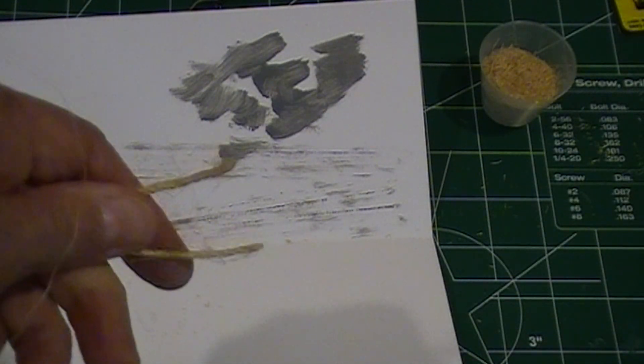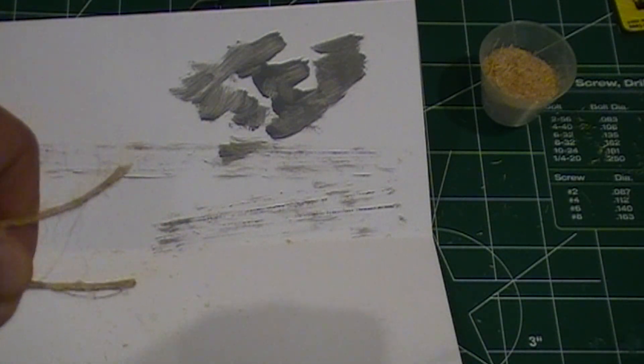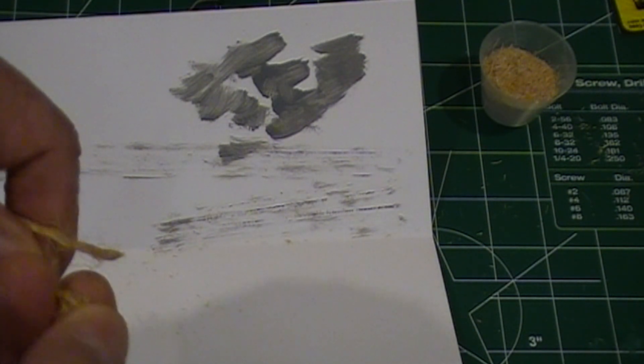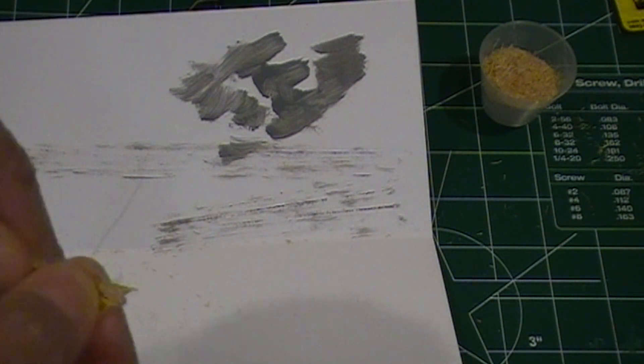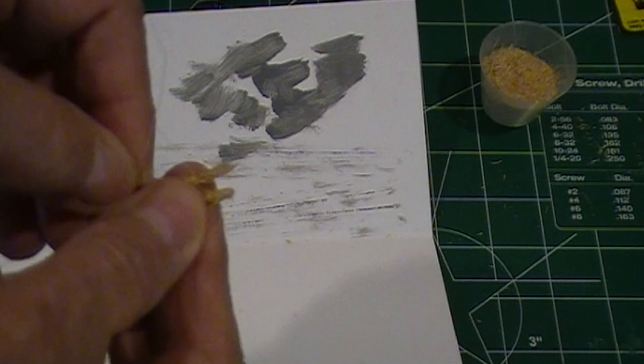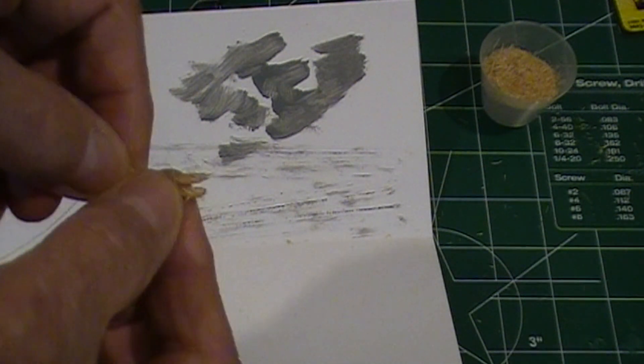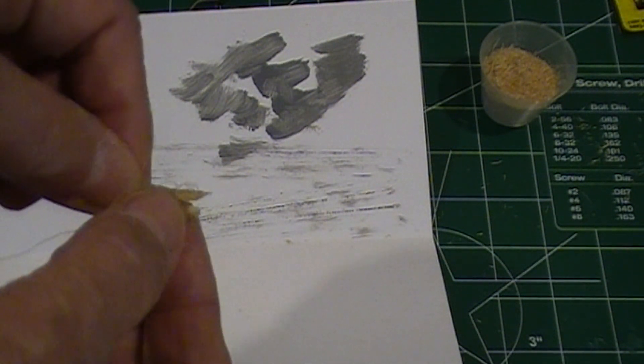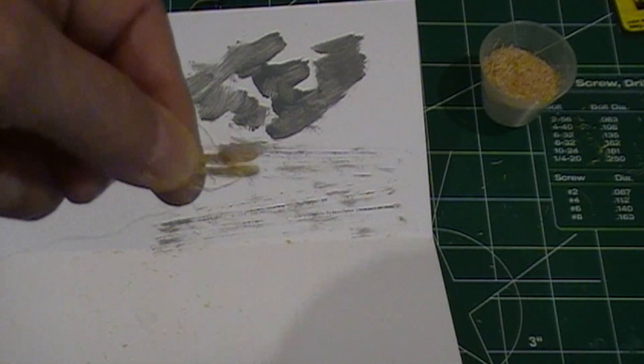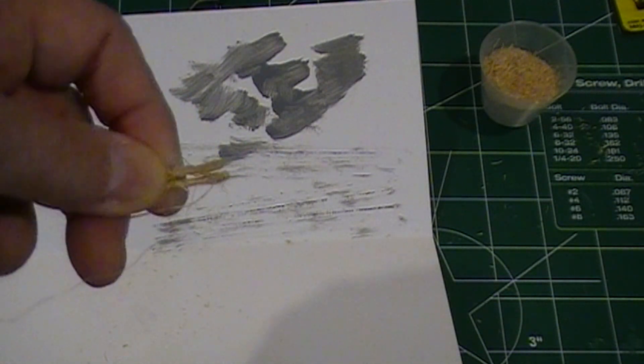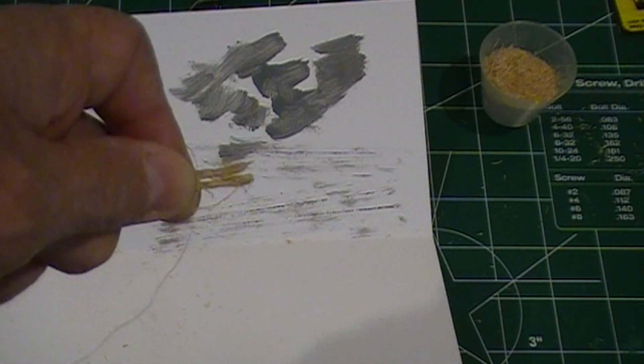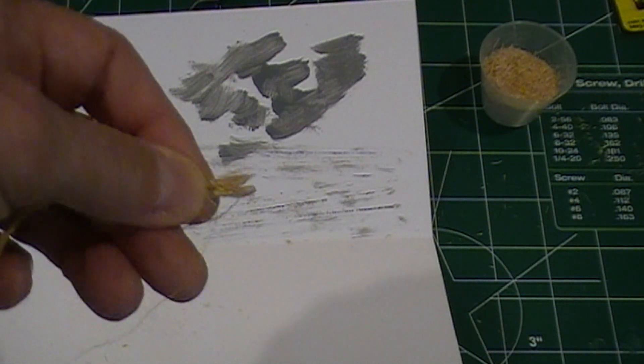Okay, I've got some jute twine here and it's fairly fine. So we're going to take that and start making our hay with it. I tried using a razor blade, exacto knife, even had the chopper, and I tried using that.